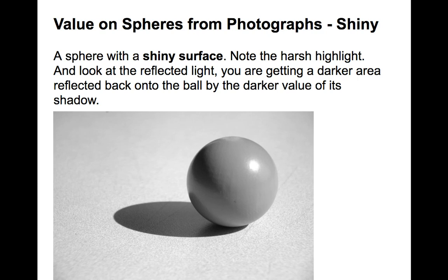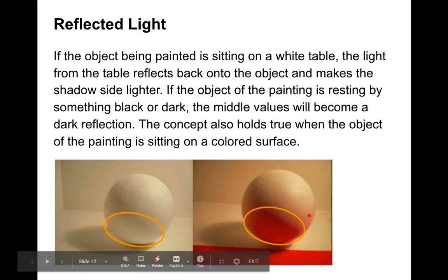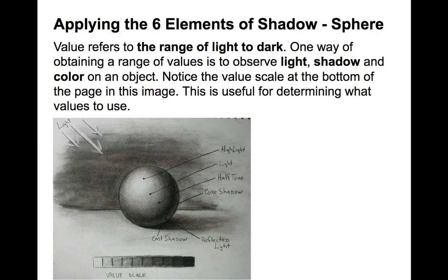On a shiny sphere, it's picking up reflected light that is actually dark — it picks up the cast shadow as well as the table surface area. So reflected light can be dark. Here is also an example of reflected light picking up the color of something the object is sitting on: the reflected light on one side picks up red while the other picks up white.